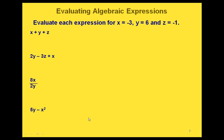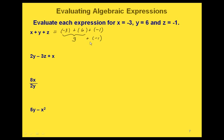If we evaluate algebraic expressions, we're just going to replace our variables with the given values. We're going to use the same values for the variables in each of these four problems. Writing these out with parentheses: x is replaced with negative 3, y is replaced with 6, and z is replaced with negative 1. Now we just have two additions. Adding a negative number and a positive number first gives us a value of 3. Then our last addition gives us 2. So our answer for this one is 2.